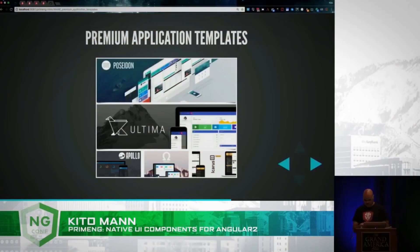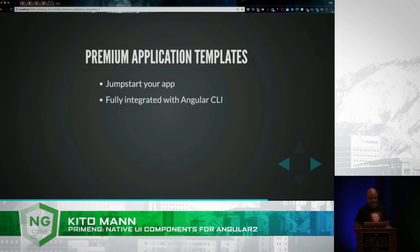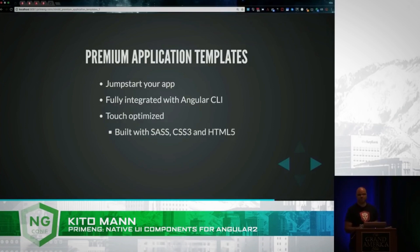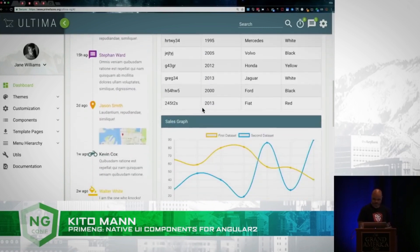Another thing I want to talk about are the application templates. Basically they just make it easier if you're building a whole app that you want to use PrimeNG components — you can get one of these templates and they just let you get started very easily. They're fully integrated with Angular CLI, they're also touch-optimized, and they're built with Sass, CSS3, HTML5, et cetera. This is another one, and you see it has a similar idea — just sort of a dashboard page to show you what's going on.